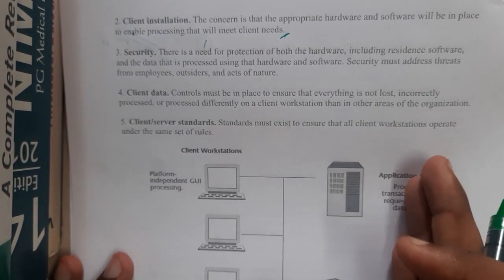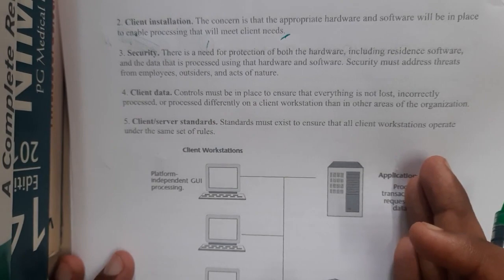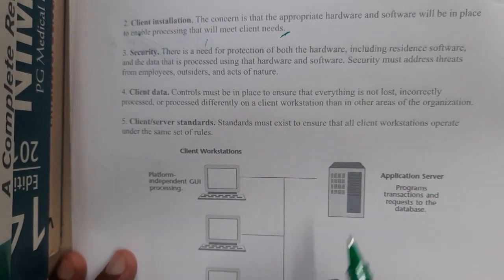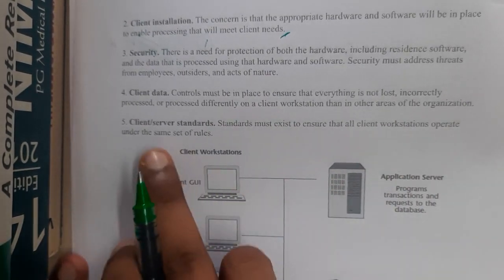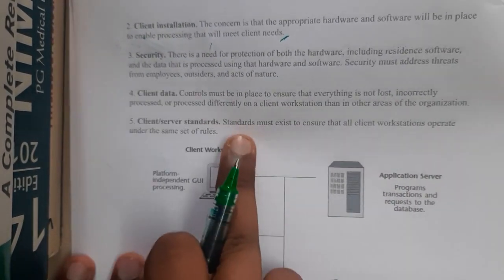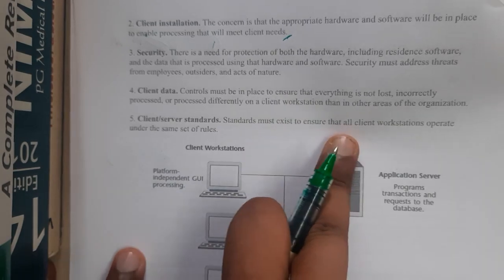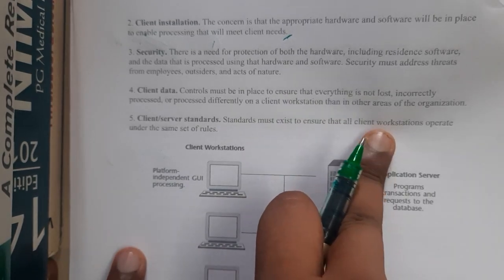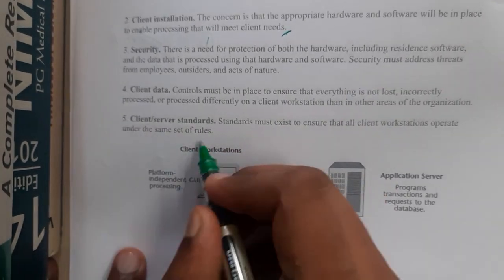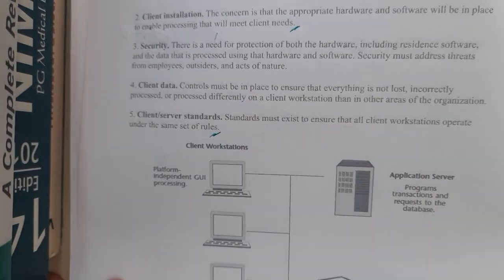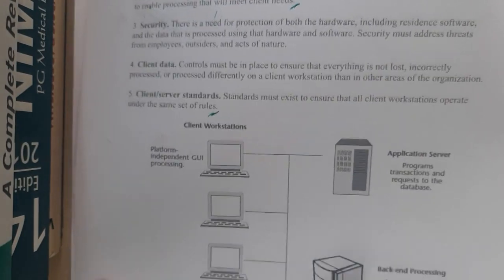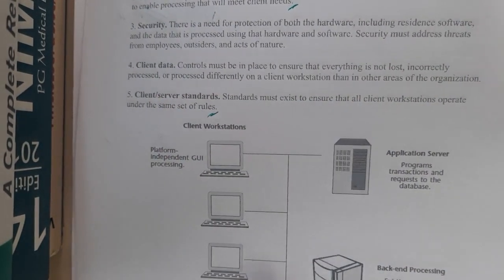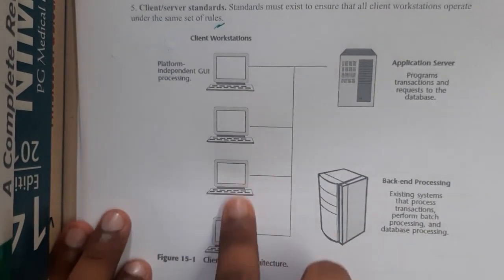The fifth concern is client-server standards. There should be rules, regulations, and policies followed by both the client and the server. Standards must exist to ensure that all client-server stations operate with the same rules.